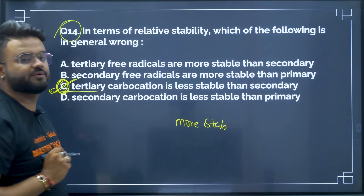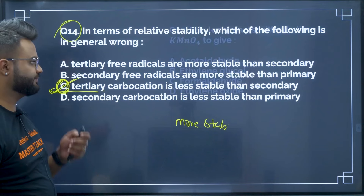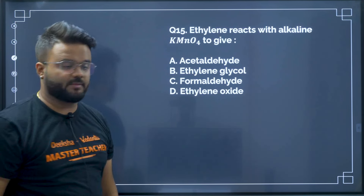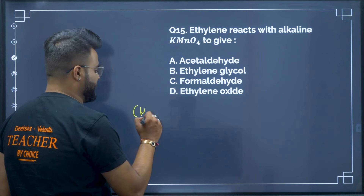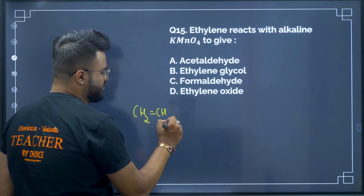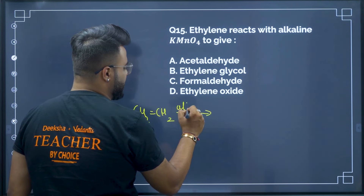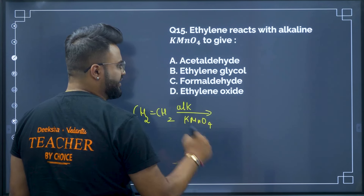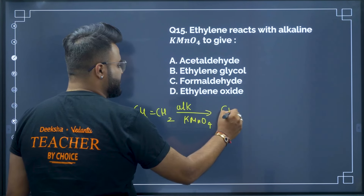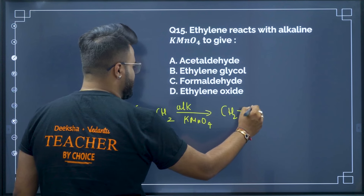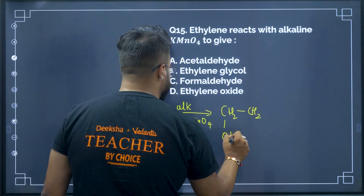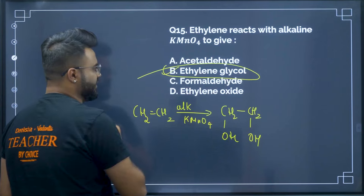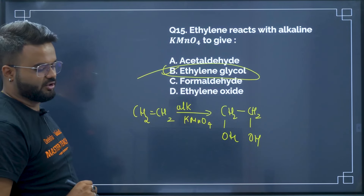Question 15: Ethylene reacts with alkaline KMnO₄. CH₂=CH₂ when reacted with alkaline KMnO₄ forms glycol — CH₂(OH)−CH₂(OH), that is ethylene glycol. Therefore option B is your correct answer.